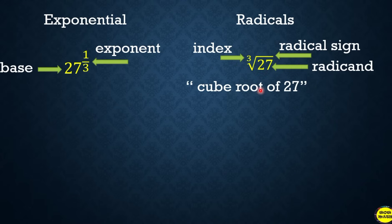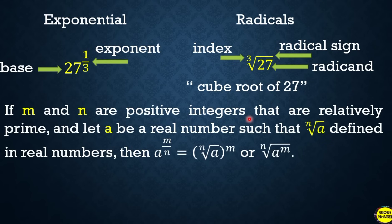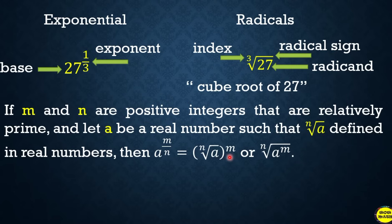Remember: if m and n are positive integers that are relatively prime, and a is a real number such that the nth root of a is defined in real numbers, then a raised to m over n equals the nth root of a raised to m. The denominator becomes the index, and the numerator becomes the power of the base. It can also be written as the nth root of a, raised to m.